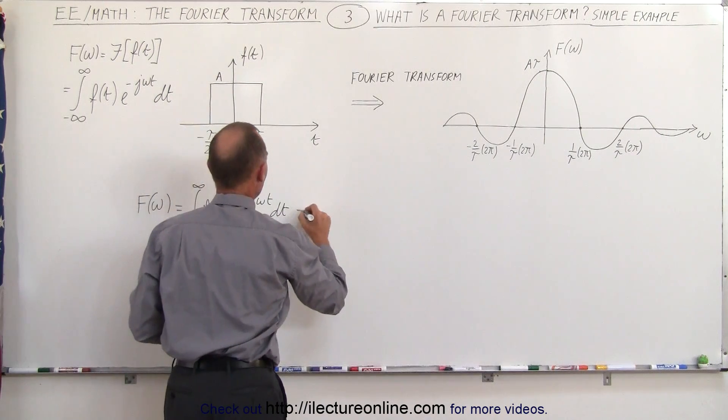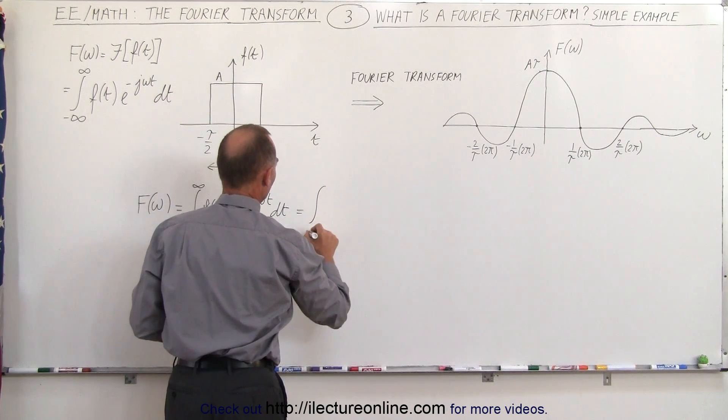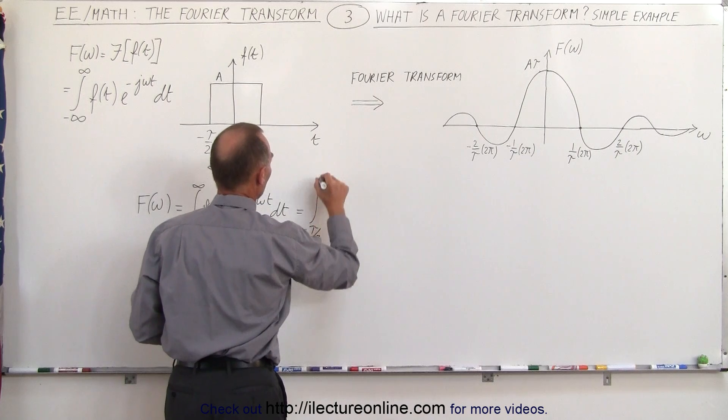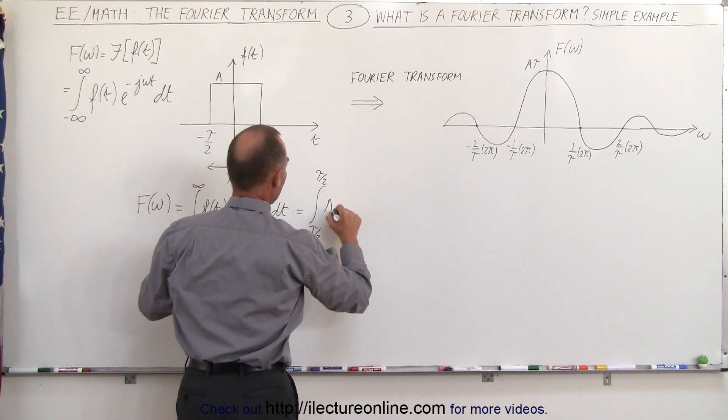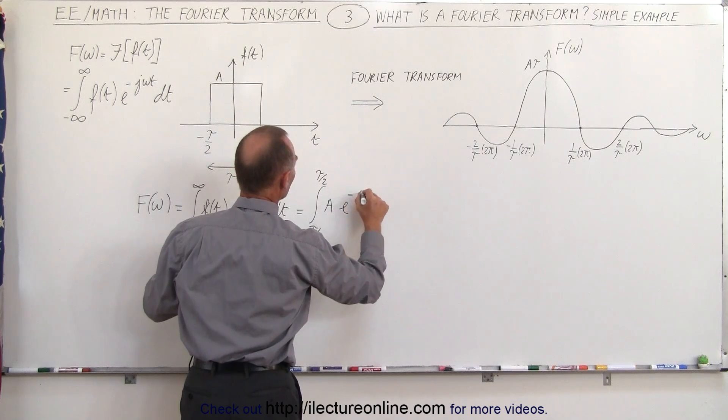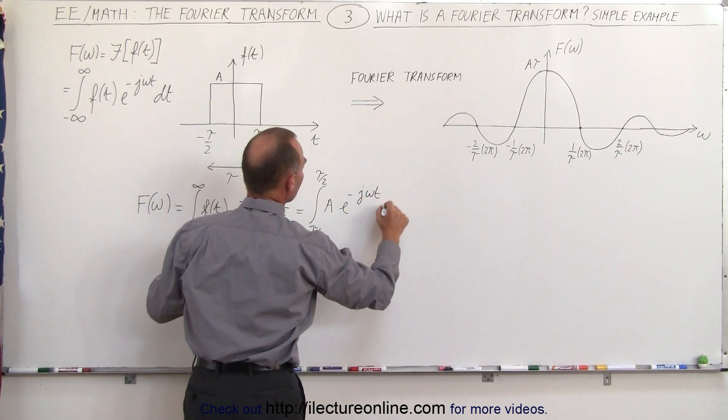So this can now be written as the integral from minus tau over 2 to tau over 2 and we have the function which is A times e to the minus j omega t dt.